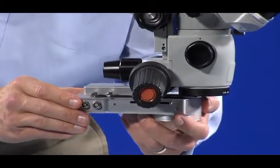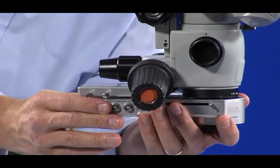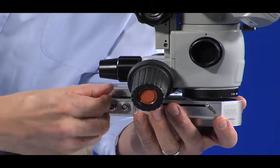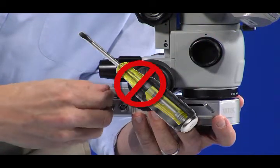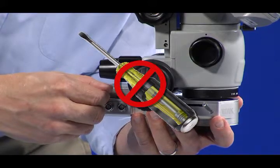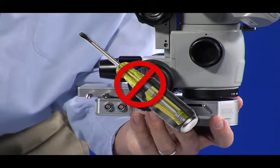Slide the dovetail on the CLA into the adapter plate installed on the microscope. Then, tighten the thumb screws to secure the CLA in place. Warning: do not use a screwdriver to tighten the thumb screws. A screwdriver places excessive force on the thumb screw and may break it off.